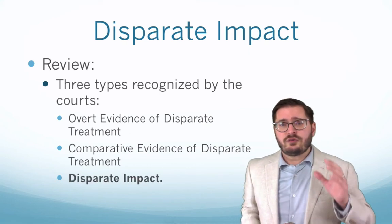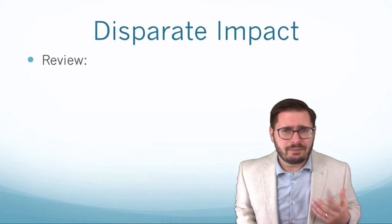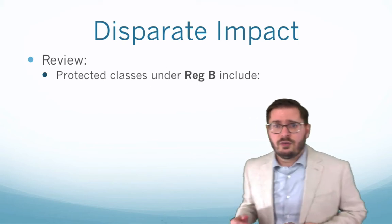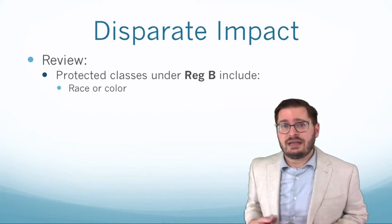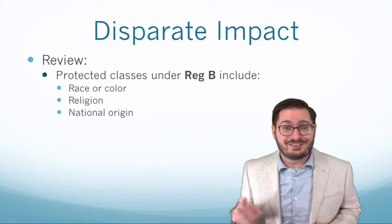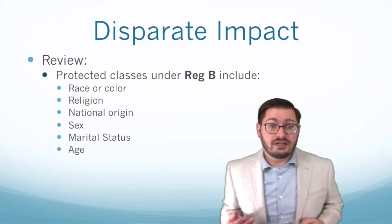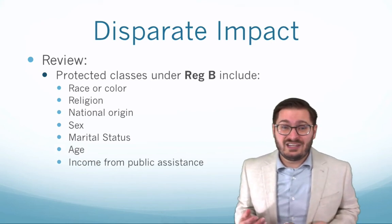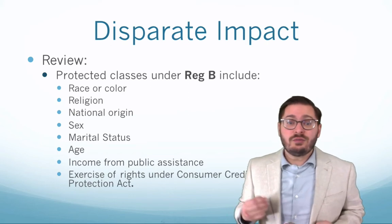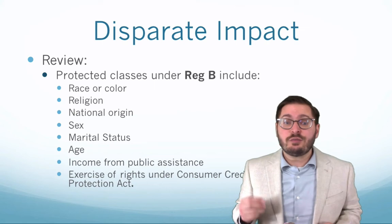Now in order for any type of discrimination to occur, it has to occur against a protected class. So let's look at what a protected class is under Regulation B, which implements the Equal Credit Opportunity Act. A protected class under Regulation B includes a number of things such as race and color, religion, national origin, gender, marital status, age, and income from public assistance, or when a consumer exercises their rights in good faith under the Consumer Credit Protection Act.